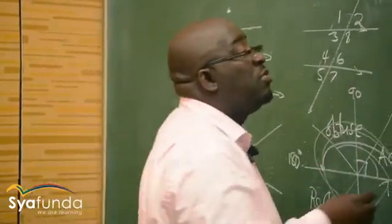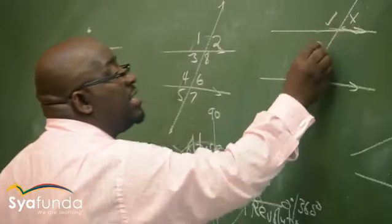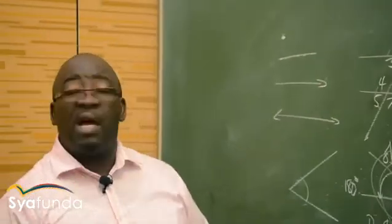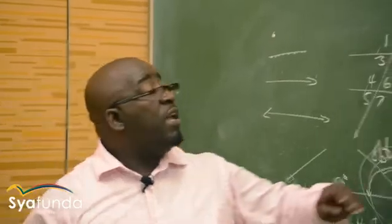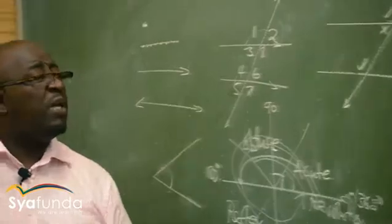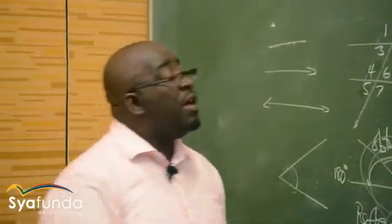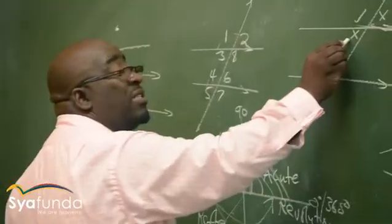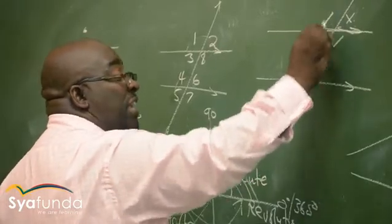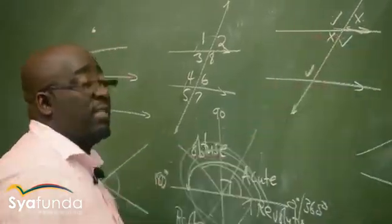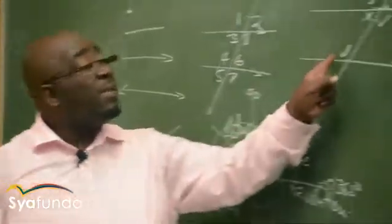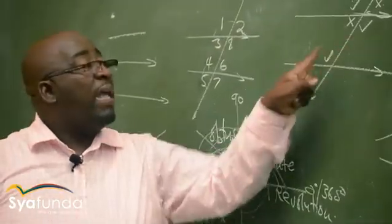It is also important to note that when two lines intersect, the angles directly across from each other are called vertical opposite angles, and they will always be equal. Both pairs of vertical opposite angles at an intersection are equal.